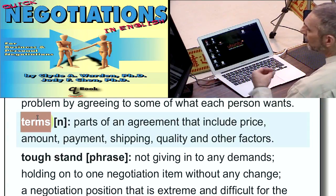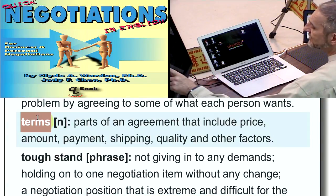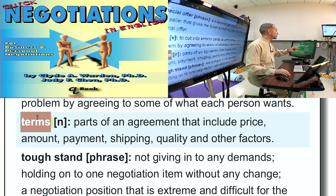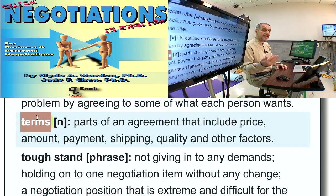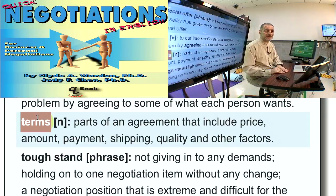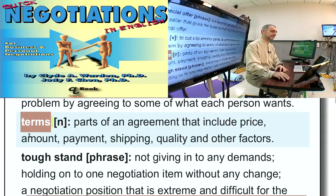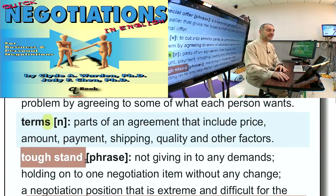Terms. The terms of the agreement are all of the details of the negotiation — what is the price, what's the quantity and the shipping, and all of those kinds of things. Those are called terms. You use this in your negotiation by coming out and saying, these are our terms. Or you can ask the other side, what are your terms? We agree with your terms, or we cannot agree with your terms at this time.